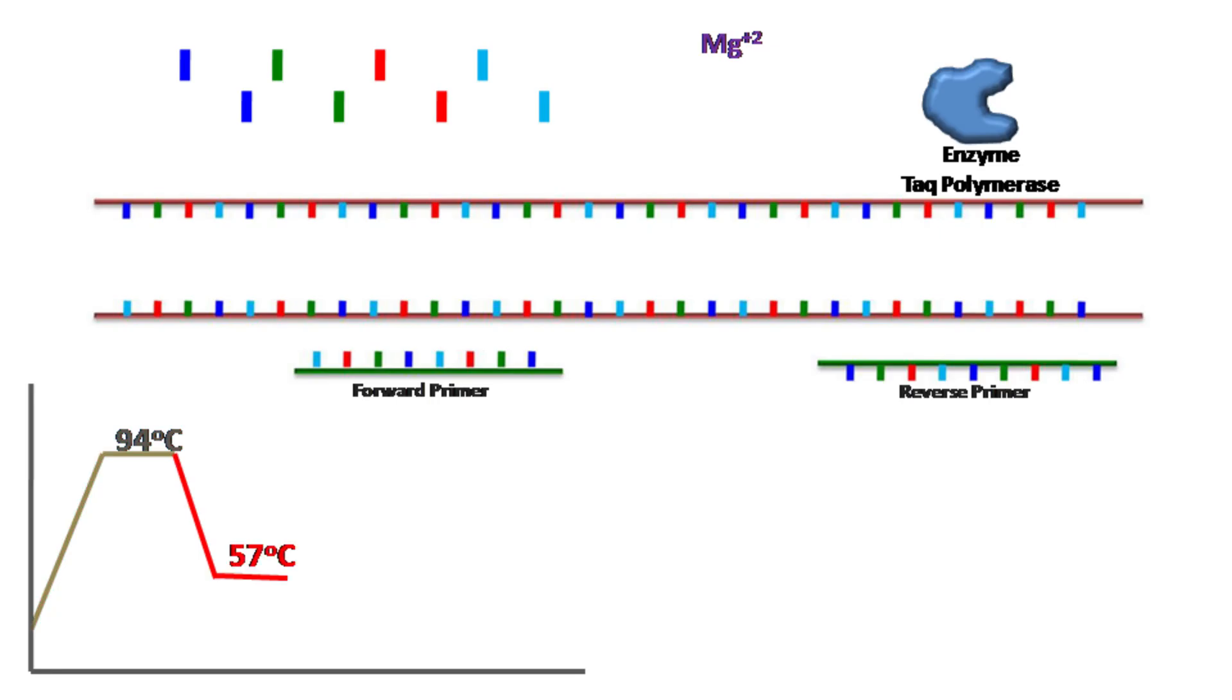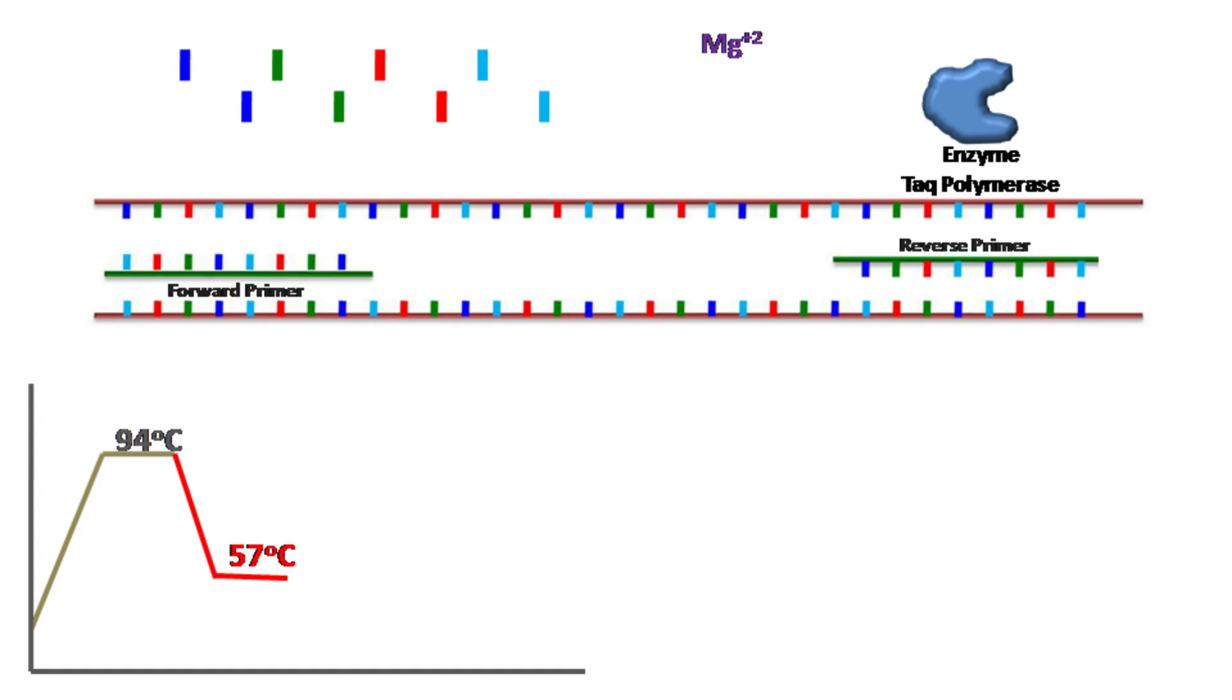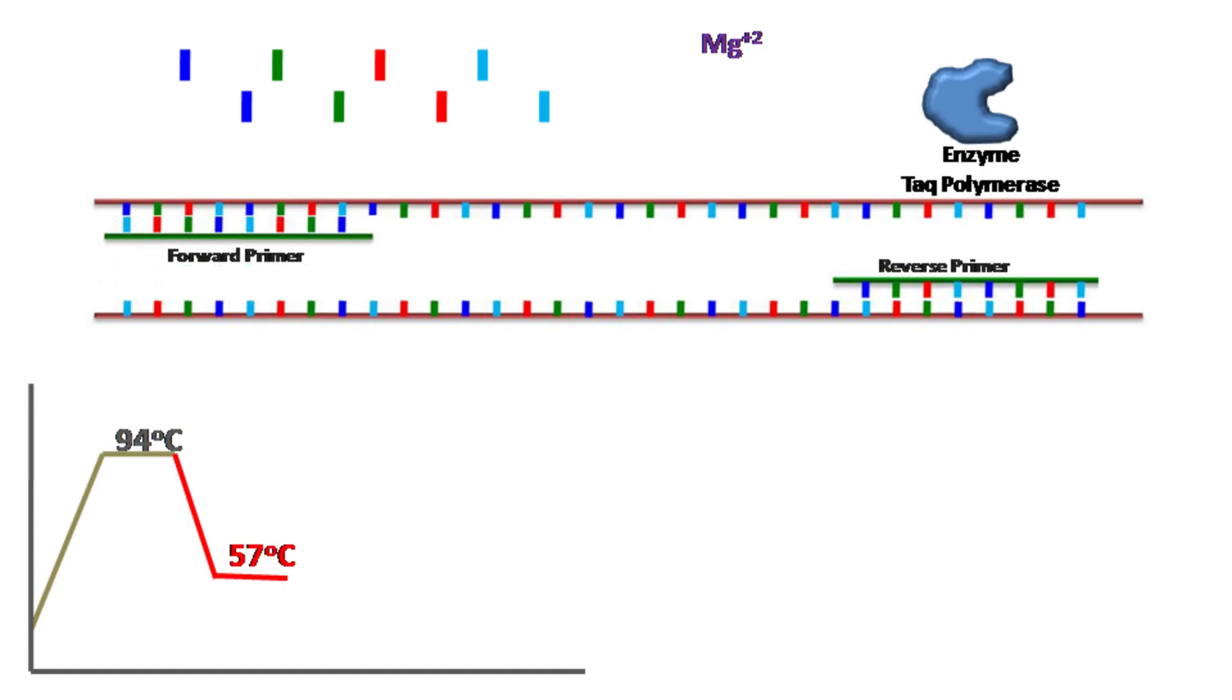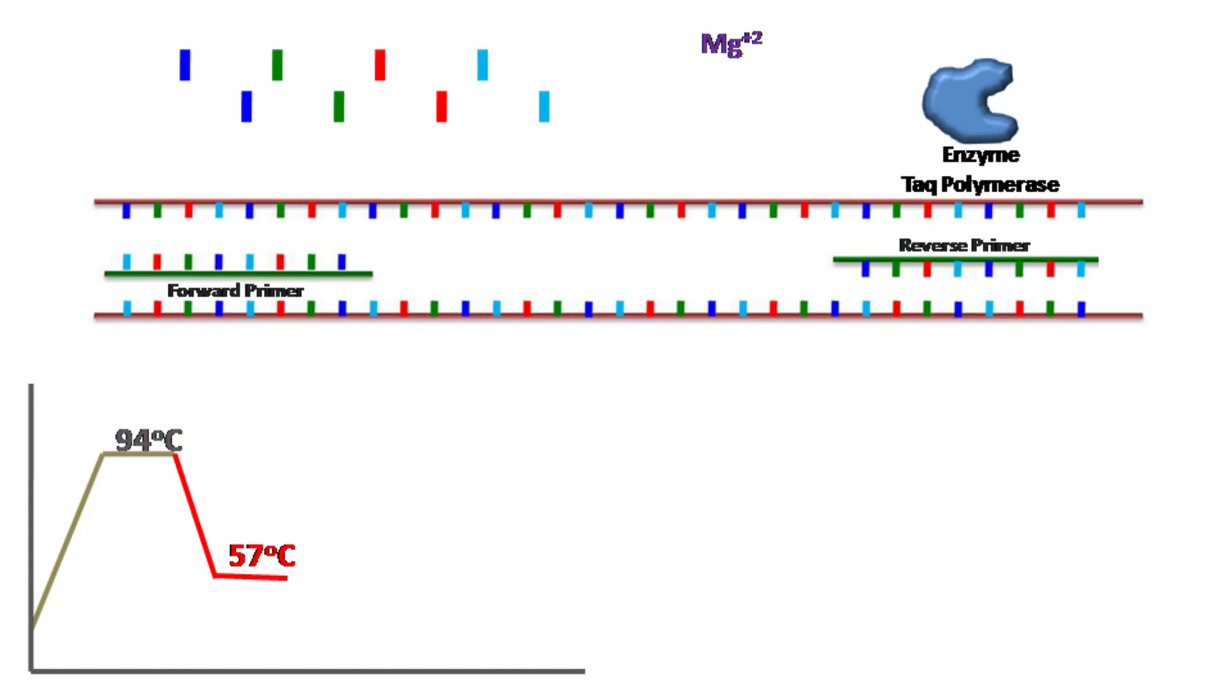Once both the strands are separated, the temperature is now lowered to 57 degrees Celsius. This temperature allows the binding of forward and reverse primers to the template DNA.